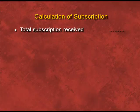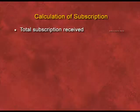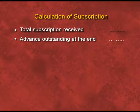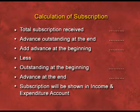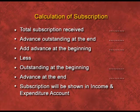You can see the formula of subscription. First of all, we have to show the total subscription received — whether it is of previous year, current year, or next year. Then we have to add outstanding at the end of the current year, then add advance at the beginning of the current year, then deduct two items: outstanding at the beginning and advance at the end. The balance arrived will be shown in the income and expenditure account.